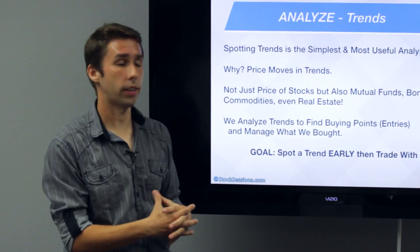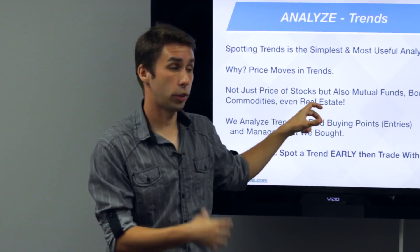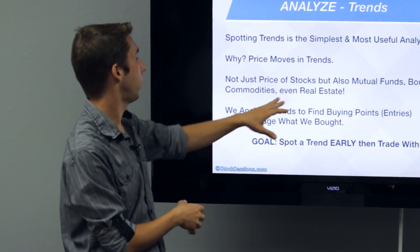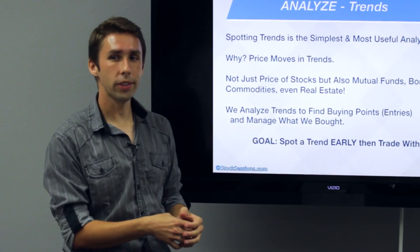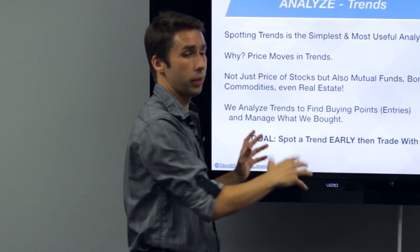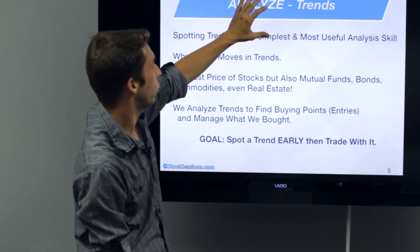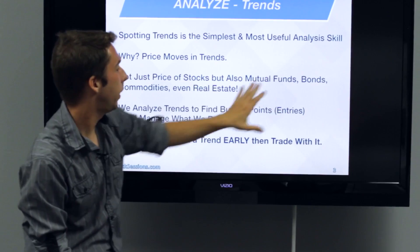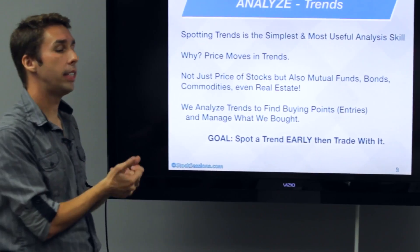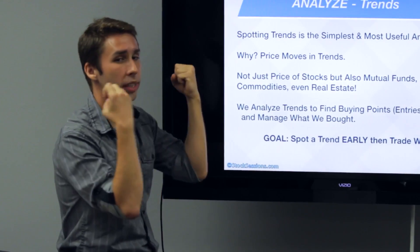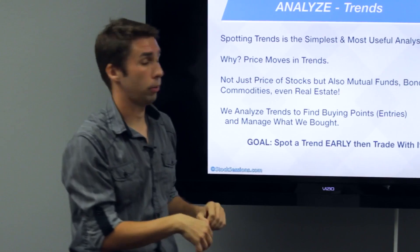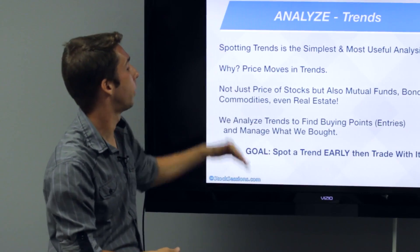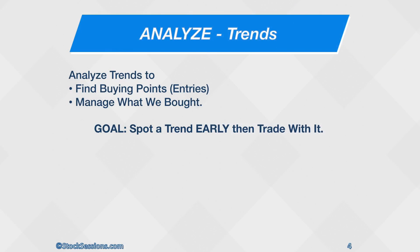Price moves in trends — not just stocks, which is the focus of Stock Sessions, but also mutual funds, bonds, and commodities like oil, gold, silver, and even cotton. Real estate follows trends too: the price of a home in a neighborhood, state, or region tends to trend up, stall at the top, then trend lower. Ask any realtor — sometimes the market is really hot and it's easy to sell a home, that's an uptrend. Sometimes it's really difficult and you can't sell no matter what, that's a downtrend. We as analysts and investors are going to analyze trends to find those exact opportunities.